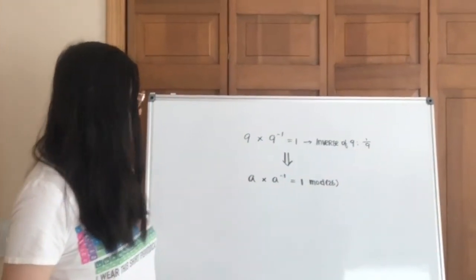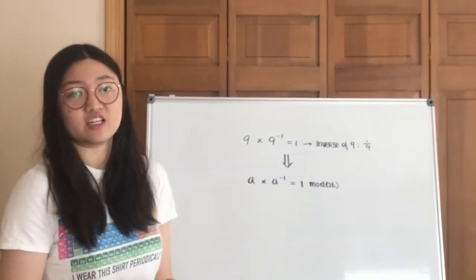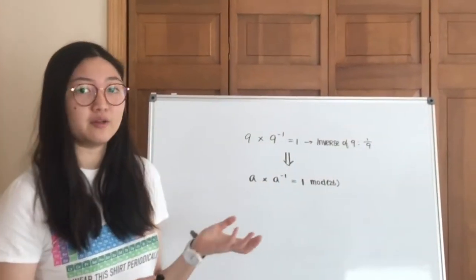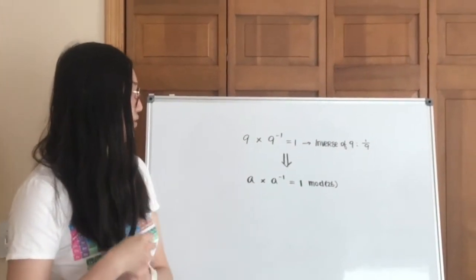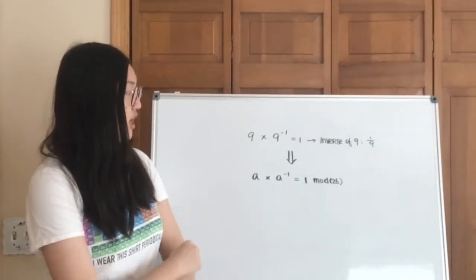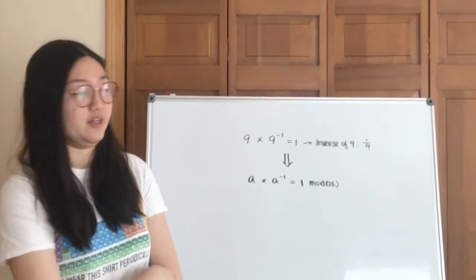So the idea of inverse in MOD26 is kind of like an inverse or reciprocal in regular arithmetic. For example, 9, the inverse of 9 is 1 over 9. It is whatever the number, when you multiply it by the original number, it's going to give you 1 in whatever system.